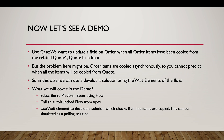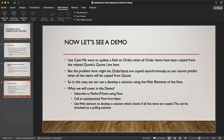For this case we can develop a polling solution using the Wait element of the flow. What we will cover in this demo: we will subscribe to a platform event using flow, call an auto launch flow from Apex, and then use the Wait element of an auto launch flow to develop a solution that checks if all the line items from the quote are copied into the order products — simulating a polling solution.